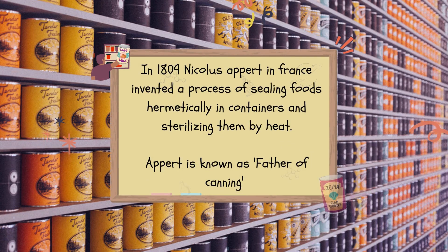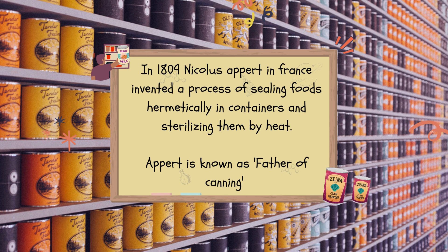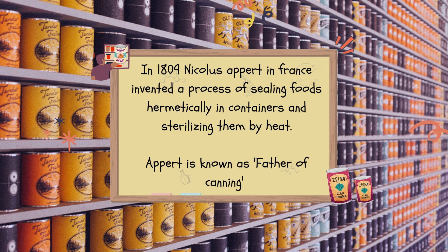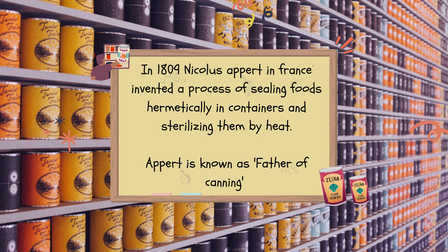In 1809, Nicolas Appert in France invented a process of sealing foodstuffs hermetically in containers and sterilizing them by heat. Appert is also known as the father of canning. This work formed the foundation of modern canning procedure. In honor of the inventor, canning is also known as appertizing. Fruits and vegetables are canned in the season when the raw material is available in plenty, and the canned products are sold in the off-season, giving better returns to the grower.